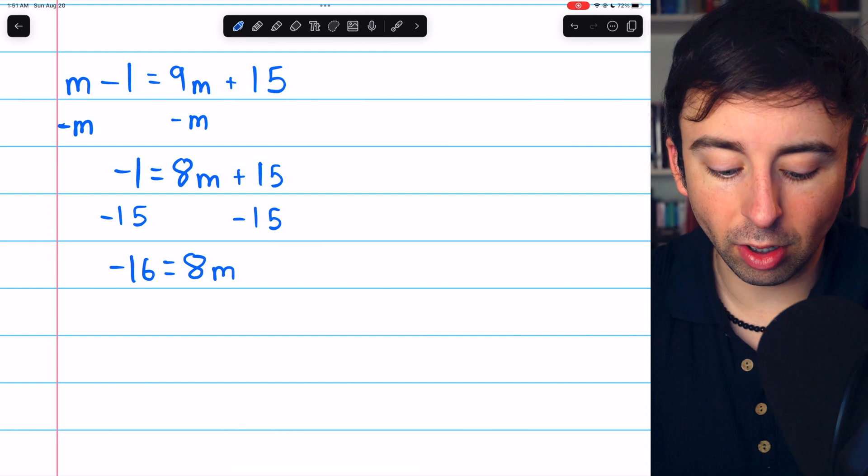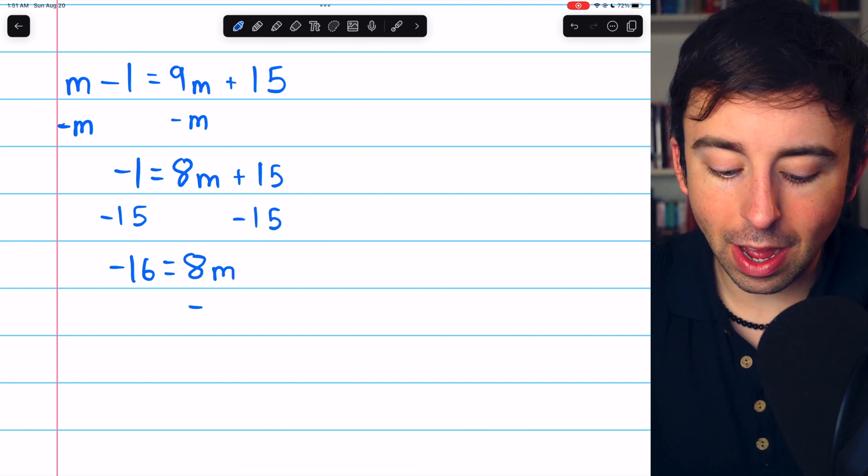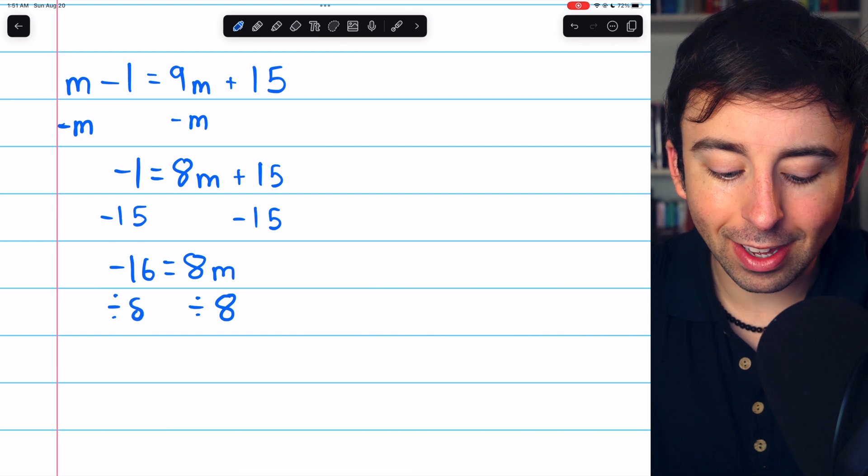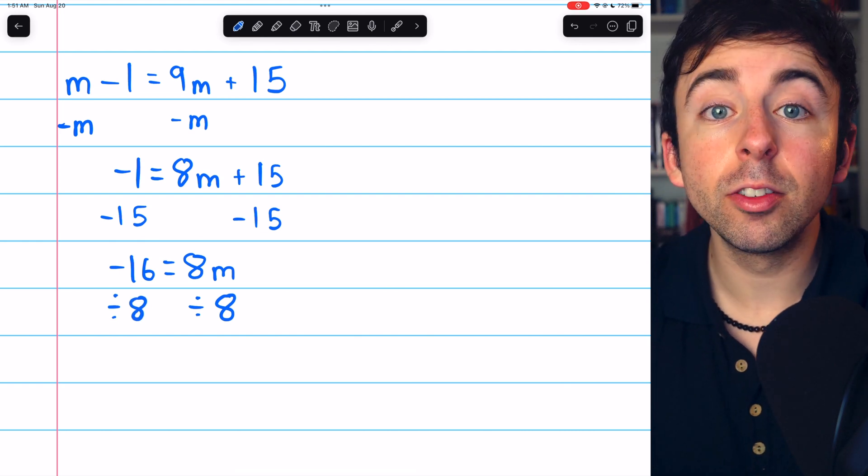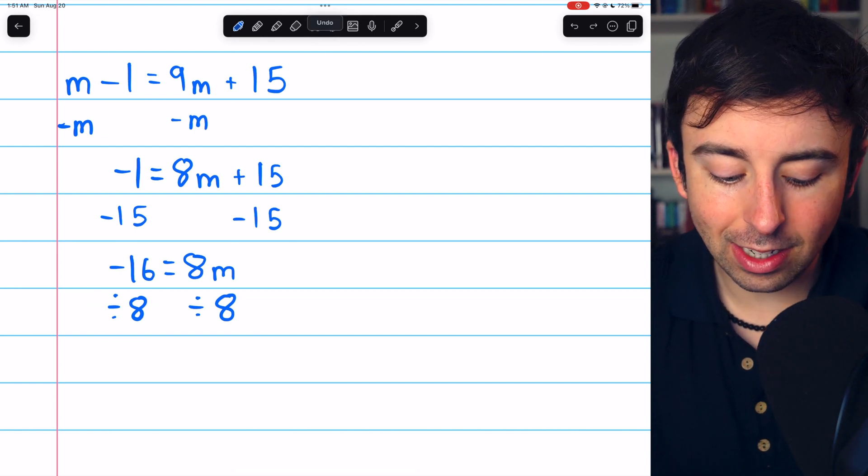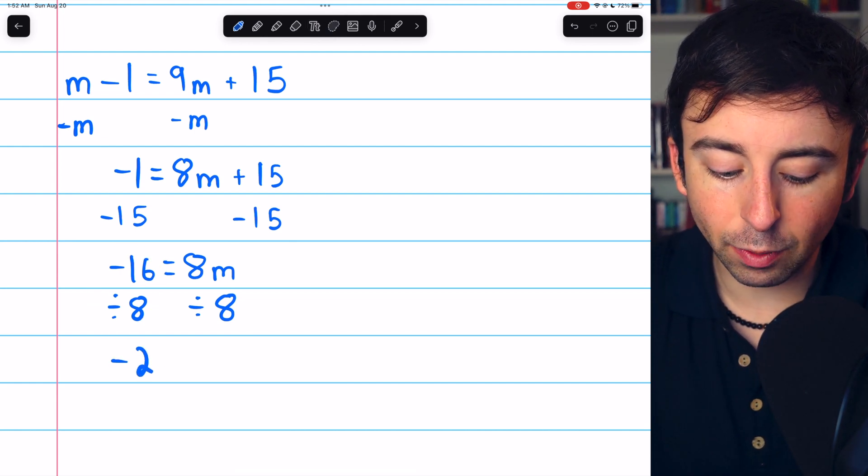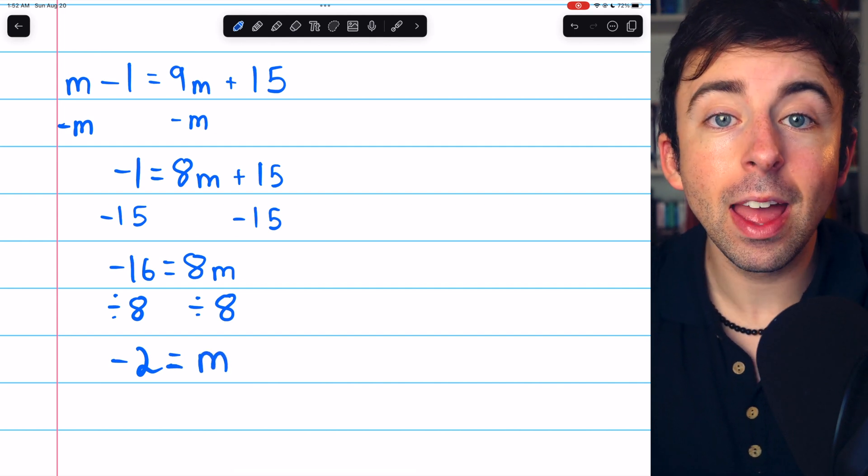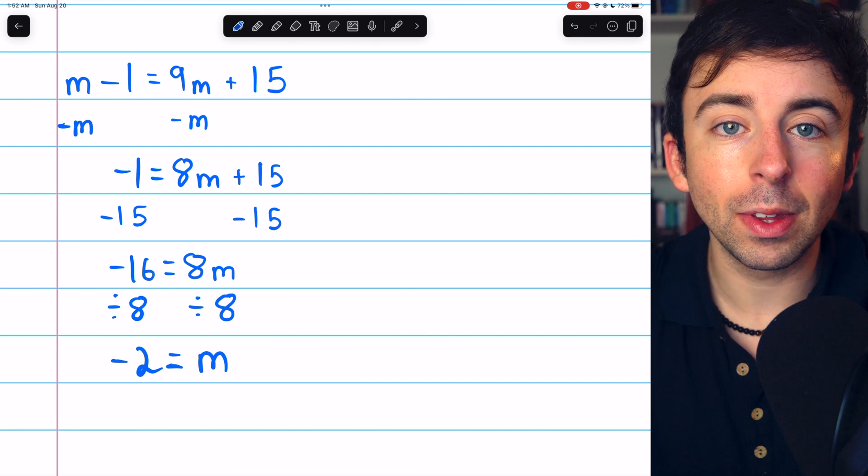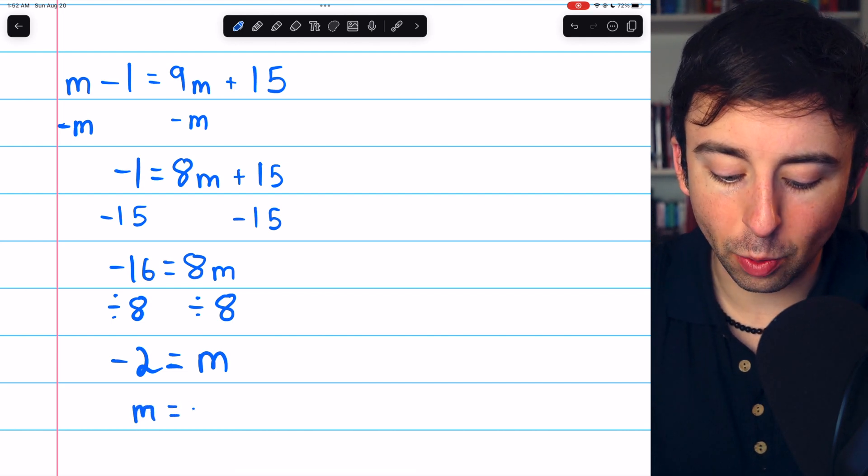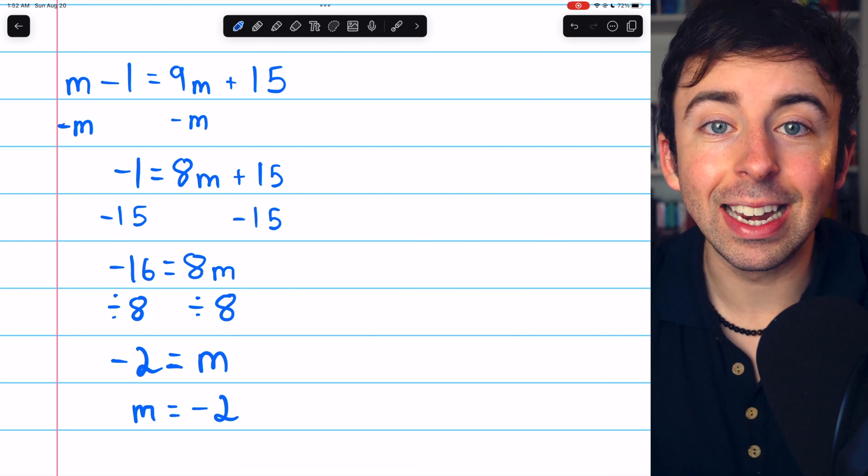Finally, to finish solving for m, we can divide both sides by 8, because right now, m is getting multiplied by 8. So to undo that, we divide by 8. On the left, negative 16 divided by 8 is negative 2. And on the right, we've now finished solving for m. And we have that negative 2 equals m. Or if you prefer, you could just write it the other way, m equals negative 2.